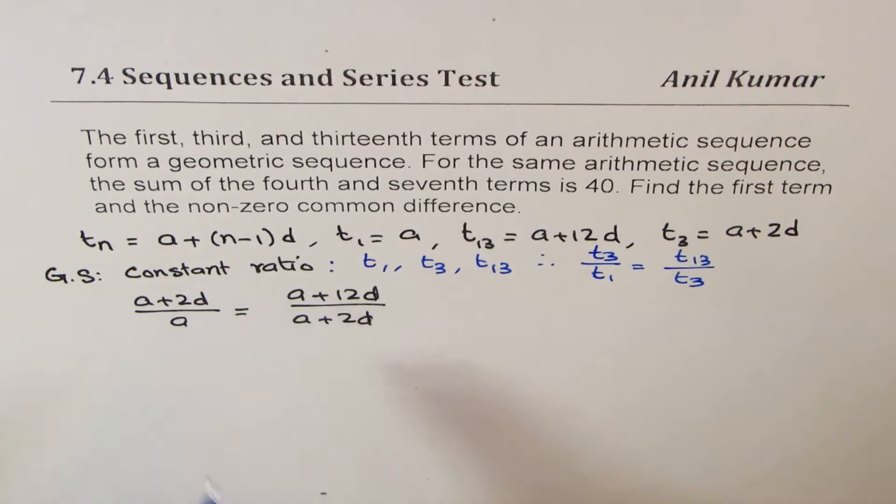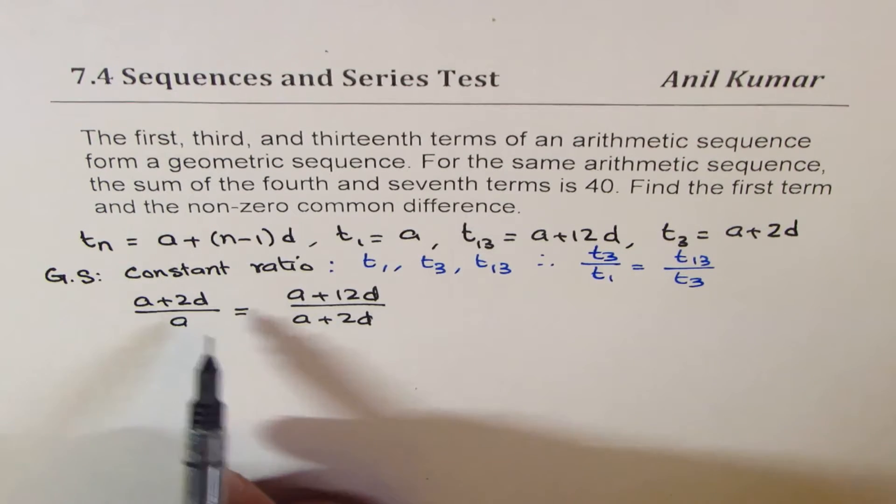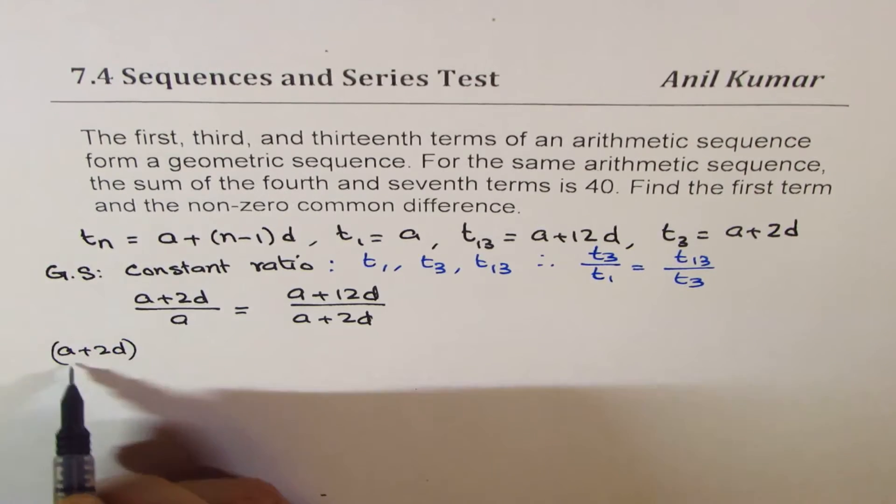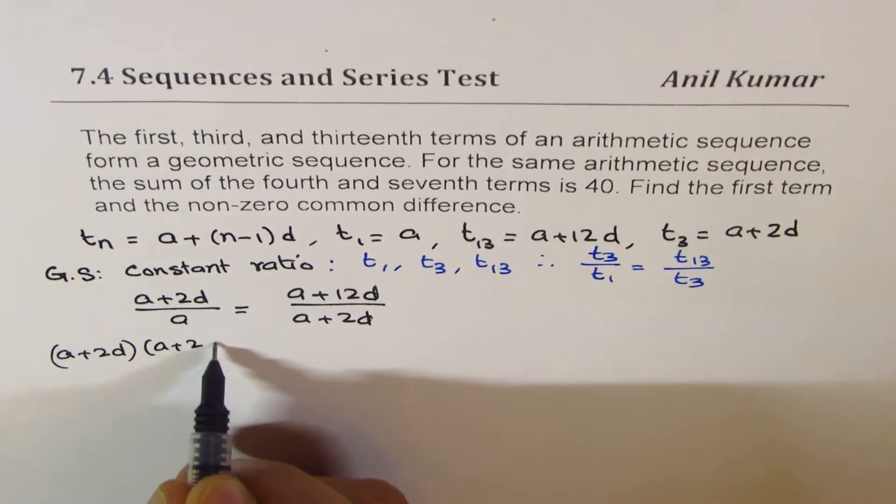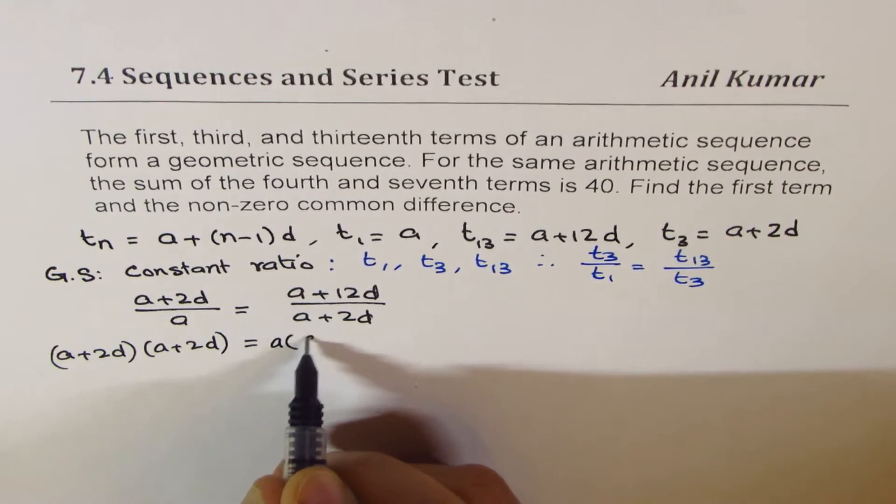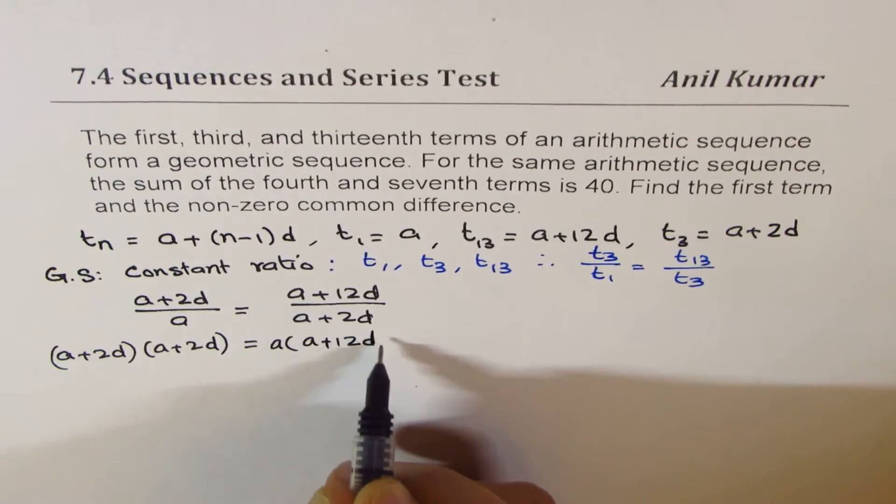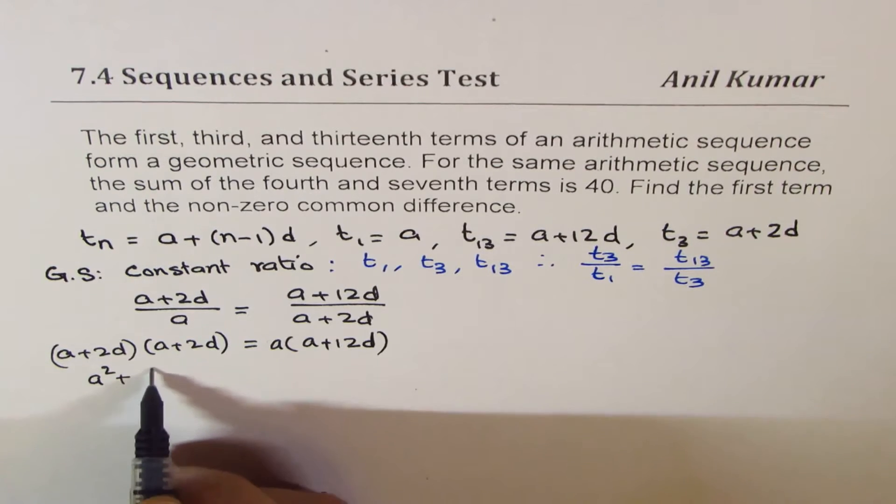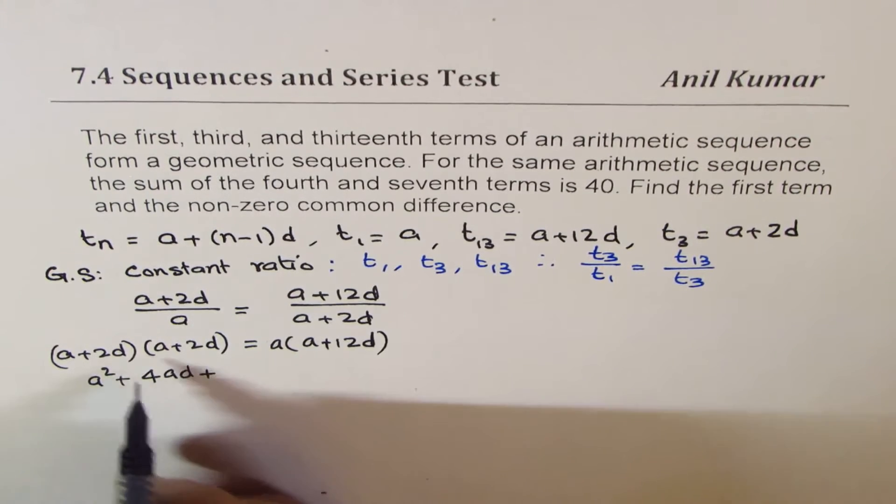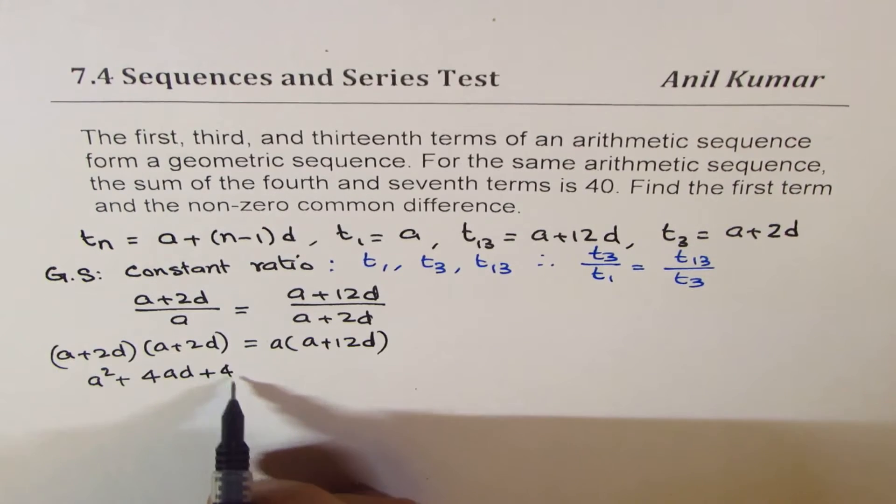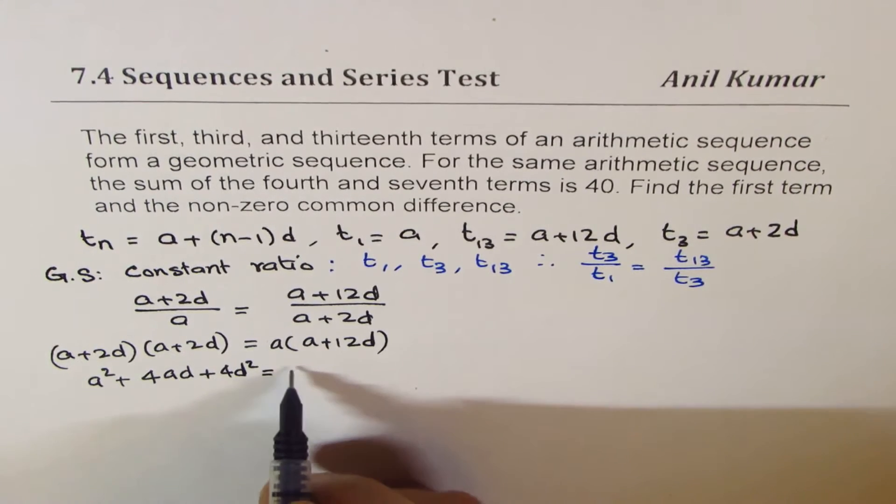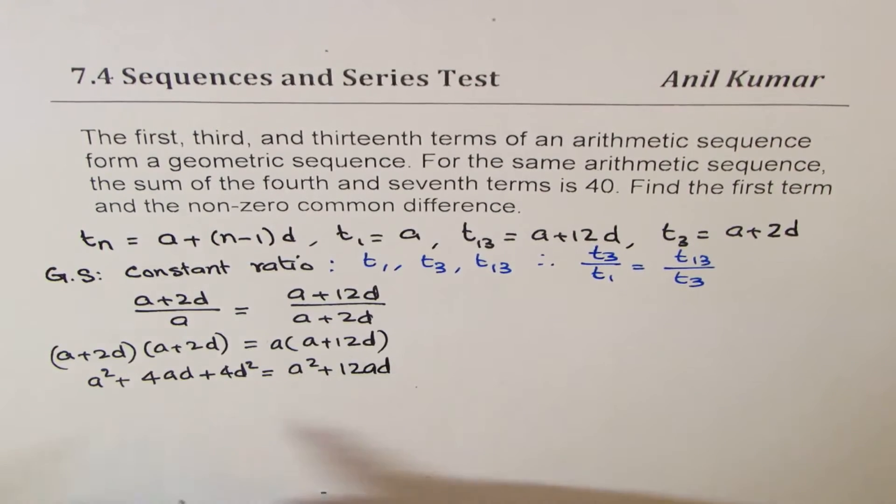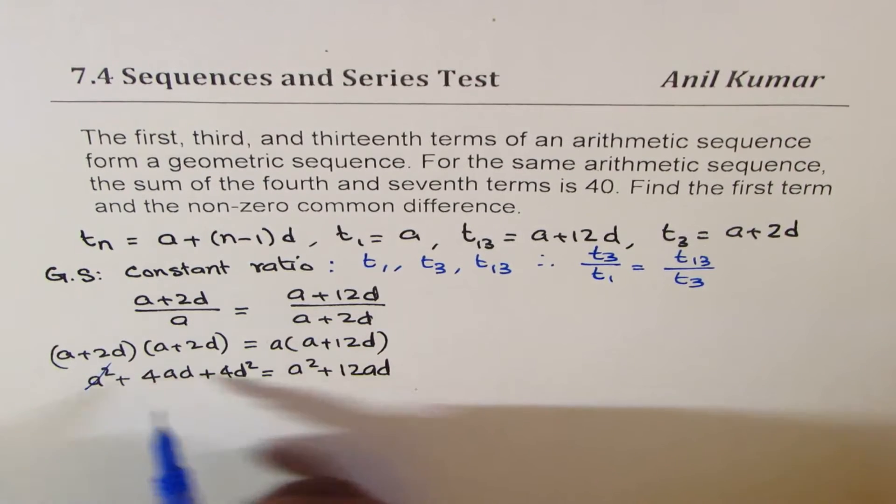Now we can cross multiply and get one equation. So we get (a plus 2d) times (a plus 2d), so that is the whole square, equals to a times (a plus 12d). So here you get a squared plus 4ad plus 4d squared equals to a squared plus 12ad.